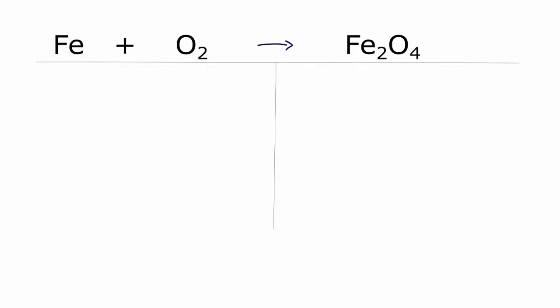So let's write down the atoms on each side of the equation. We have iron, and we have one of those, and then oxygen, we have two of those. Over here on the product, iron, we have two iron atoms, and then oxygen, we have four.